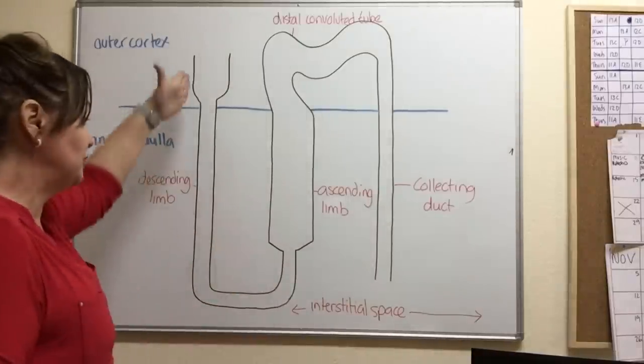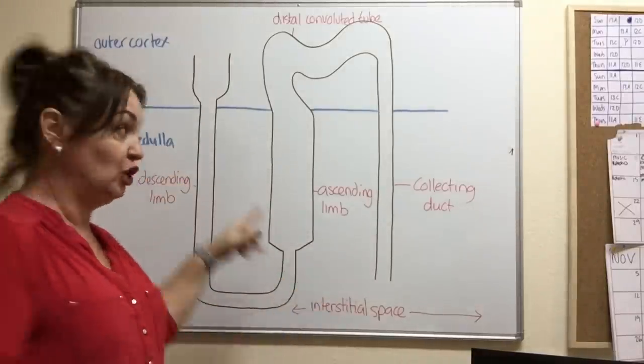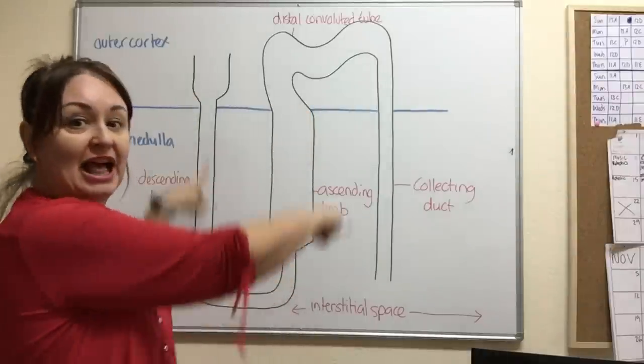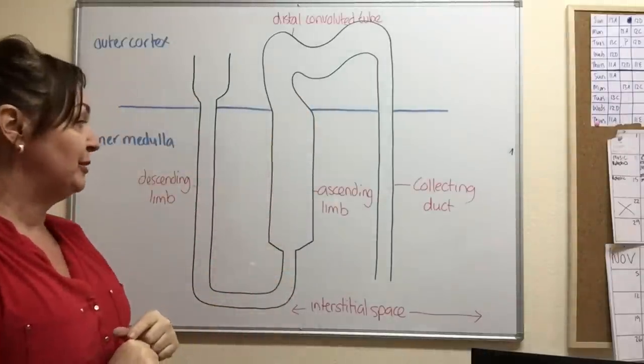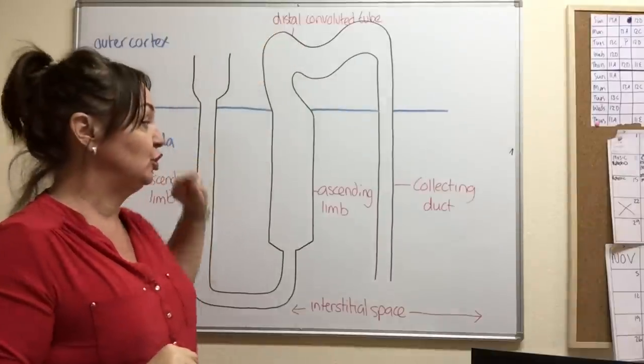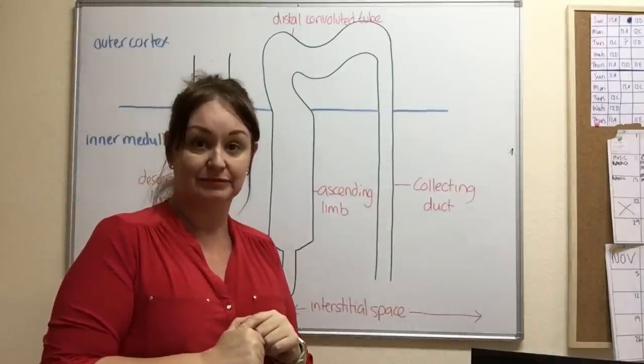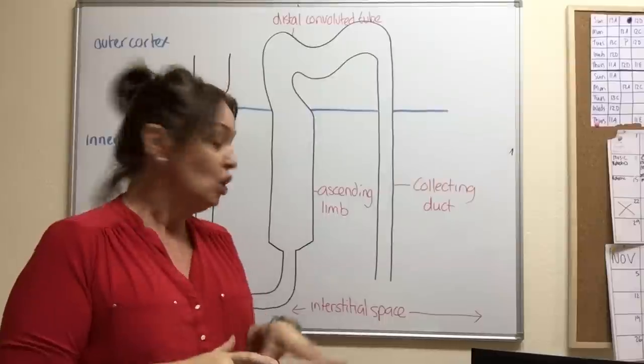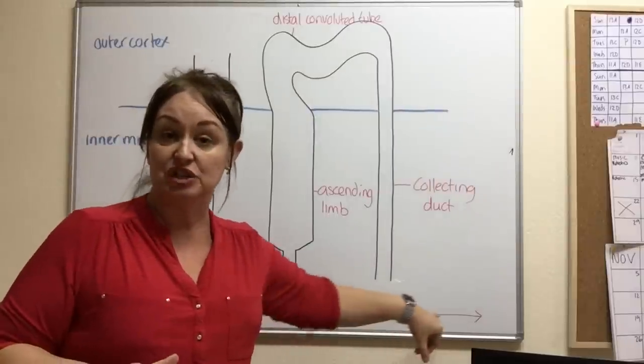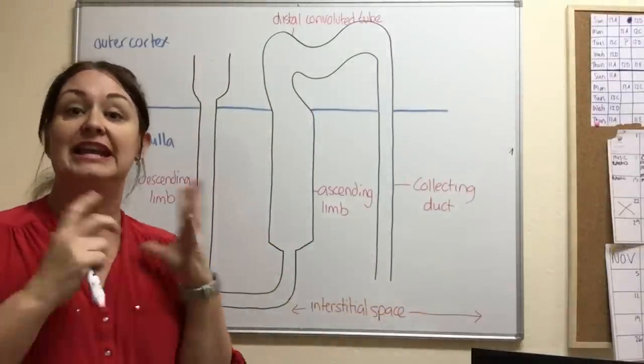Just to go over some of those names, we've got the ascending limb, the base of the hairpin loop. This whole thing is considered to be a hairpin shape. We've got the ascending limb, the distal convoluted tubule and of course, the collecting duct there. We've got the interstitial space that runs across the whole of the inner medulla.